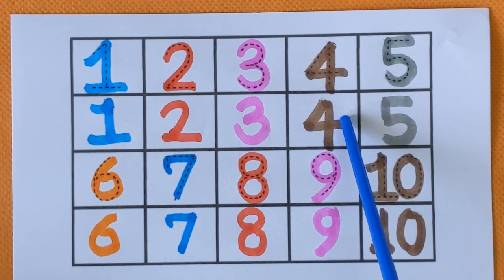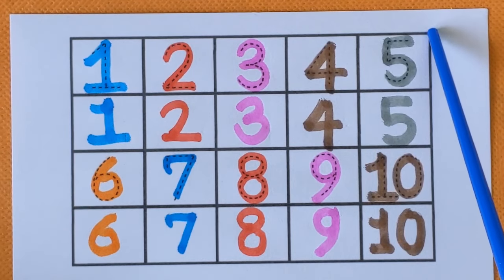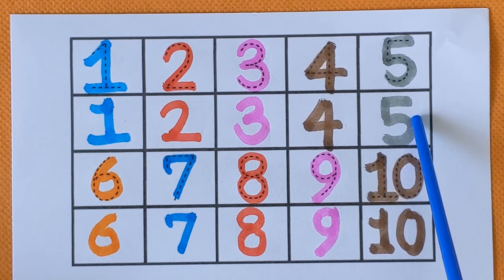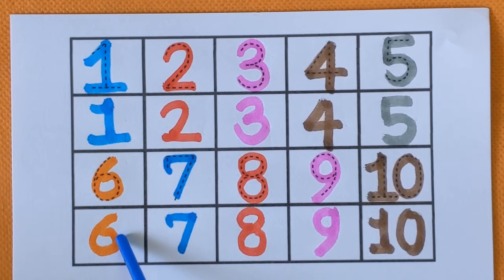This is number 4. F-O-U-R. 4. Brown color. Number 5. F-I-V-E. 5. Gray color. It's a number 6. S-I-X. 6. With the orange color.